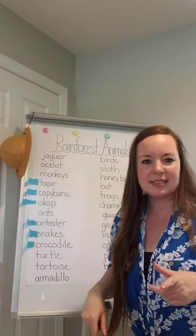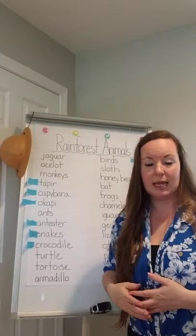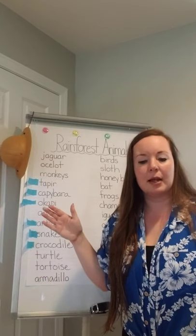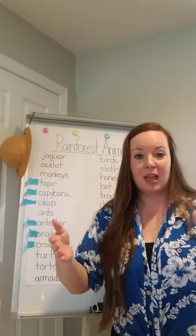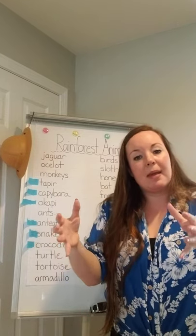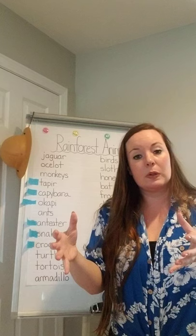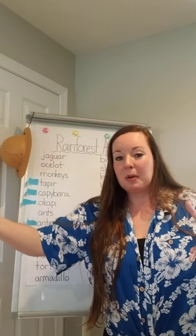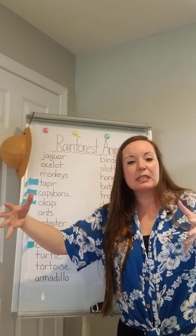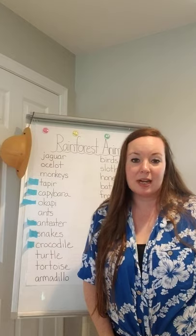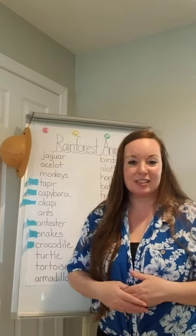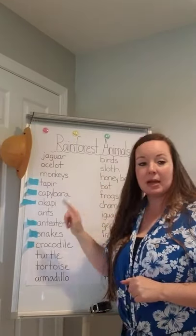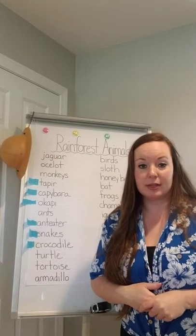Next is an ocelot — can you say that? Ocelot. An ocelot is in the cat family and it kind of looks like a leopard or a cheetah, but it's not as big. Think about a cat — about two cats put together in one body, about this big. It's a smaller cat and they love to hang out up in the treetops; they just love to relax in the trees. They have all those cool spots on them. Next are monkeys — there are lots of different types of monkeys in the rainforest.